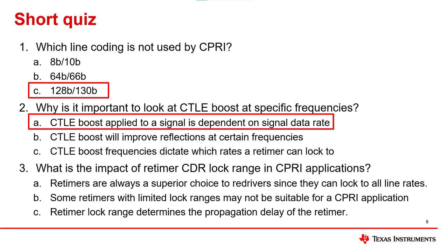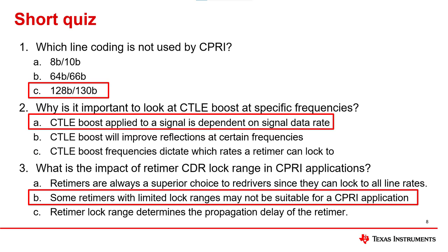Question 3: What is the impact of retimer CDR lock range in CPRI applications? A. Retimers are always a superior choice to redrivers since they can lock to all line rates. B. Some retimers with limited lock ranges may not be suitable for a CPRI application. C. Retimer lock range determines the propagation delay of the retimer. The answer is B: Some retimers with limited lock ranges may not be suitable for a CPRI application.